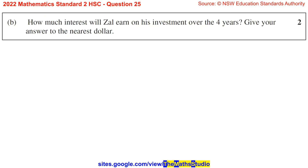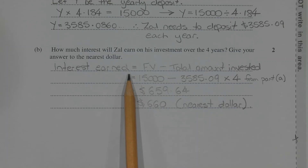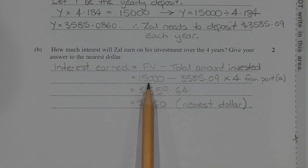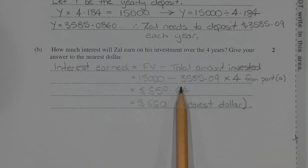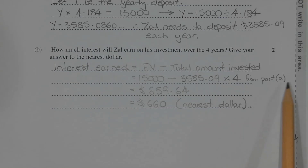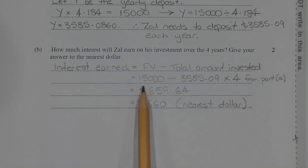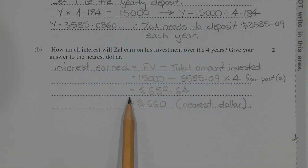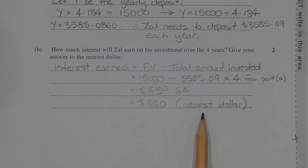Part B. How much interest will Zal earn on his investment over the 4 years? Give your answer to the nearest dollar. The interest earned is equal to the future value minus the total amount invested. The future value after 4 years is $15,000, and the total amount invested is $3,585.09 per year over 4 years. So the interest earned equals $15,000 minus 3585.09 times 4, which equals $659.64, which rounds to $660 to the nearest dollar.